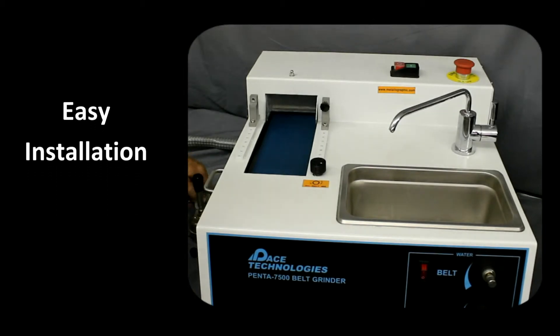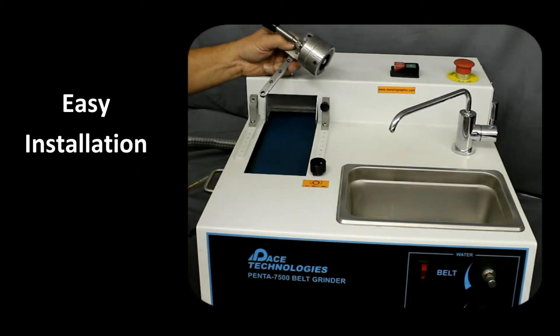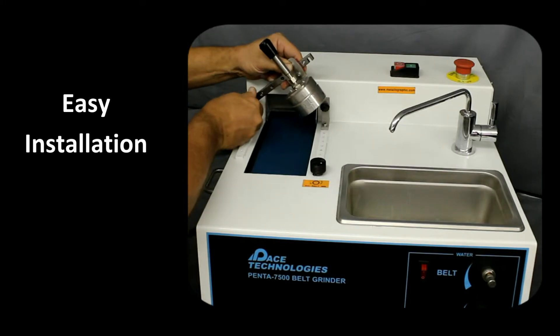The grinding attachment can be easily removed for greater access to the grinding belt. To reinstall, attach the left swing arm and reload the mounted specimen.